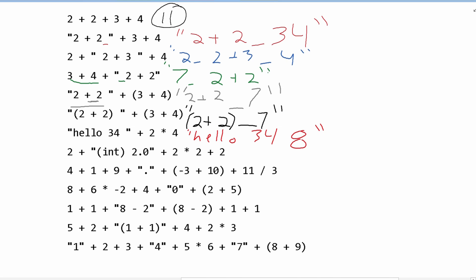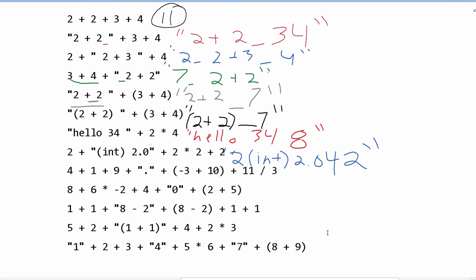Next, we have 2, and then the string "int2.0". So we will have 2, and since there's no space, it's just going to be 2int2.0. Then since there's no space after 2.0, this plus sign is a combination. So we're going to combine 2 times 2, which is 4, giving us 4 here. And then we are combining this 2 as well. So our final answer will be the string "2int2.042".